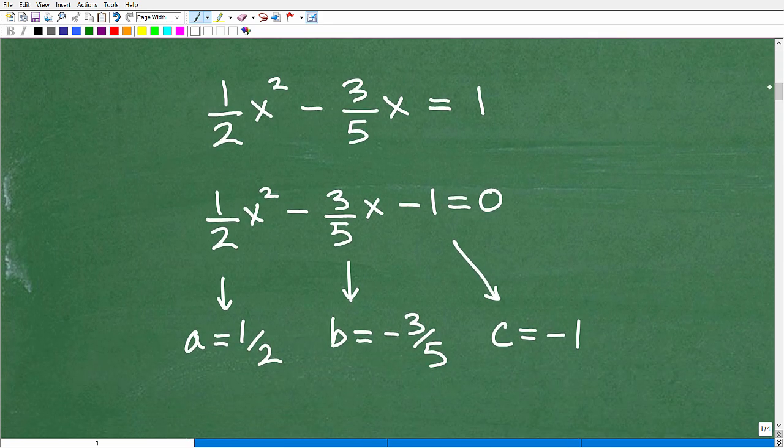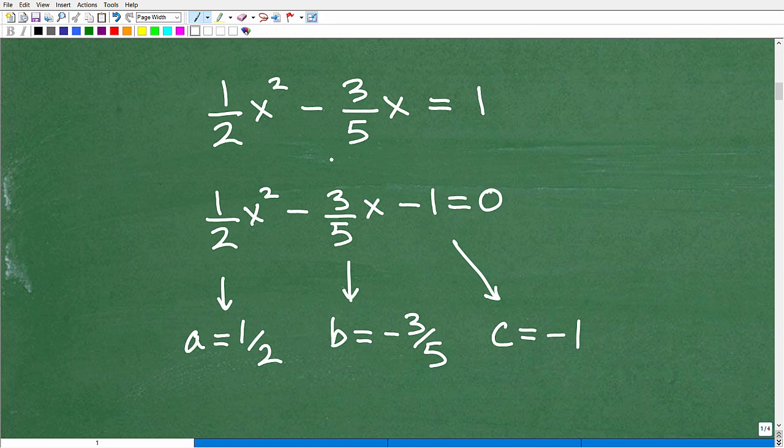So you never want to start a problem like this. And this is what I'm talking about. So here we got one half X squared minus three fifths X equals one. We see fractions, right? This is fractions. We got an equation. We got fractions going on. Some of you out there might have this expression like, oh, no fractions. Oh, then I got a quadratic equation.